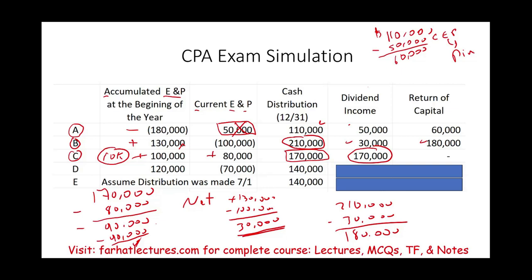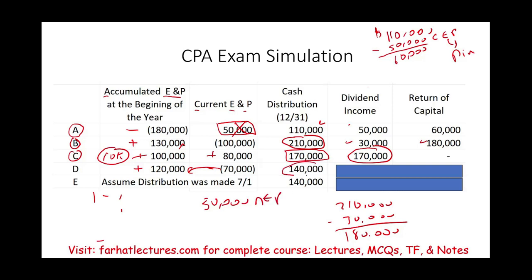Let's take a look at scenario D. Scenario D, we have a positive AEP, negative CEP. What do we do when we have those? When we have those, we can net them. We can net them because CEP end up in AEP and we have no CEP. We have negative. Therefore, we net them. If we net them, what's going to end up happening? We're going to end up with 50 AEP. So we made a distribution of 170. Well, 50 is dividend and the remainder is return of capital.